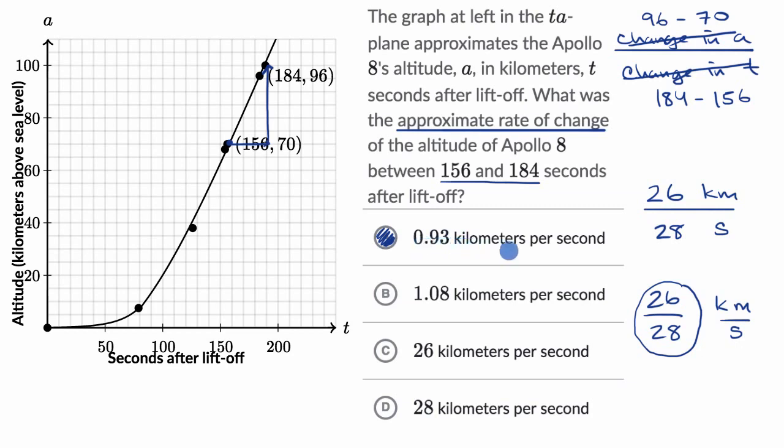We are done. 0.93 kilometers per second. We know that it's not B because that's more than one, and 26 is way more than one, and 28 is even more, even way more than one. So we feel good about choice A.